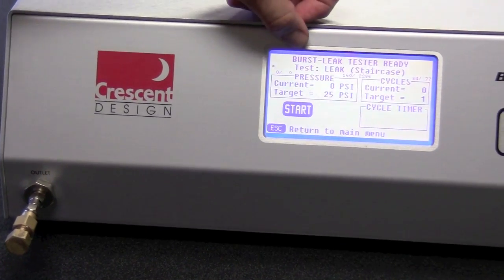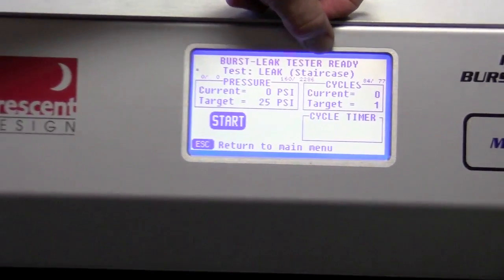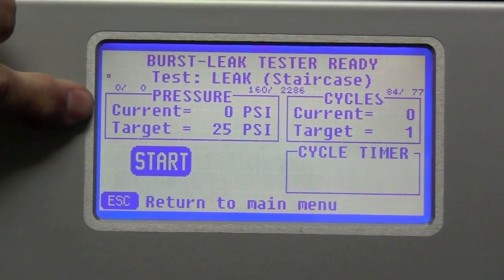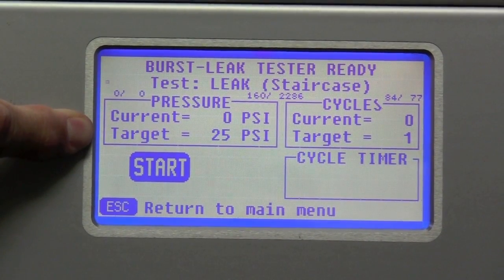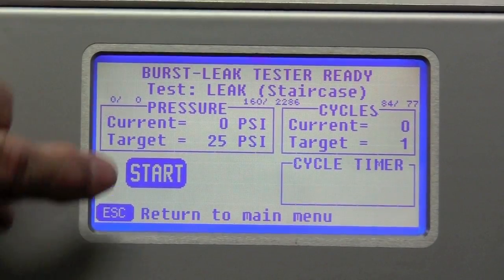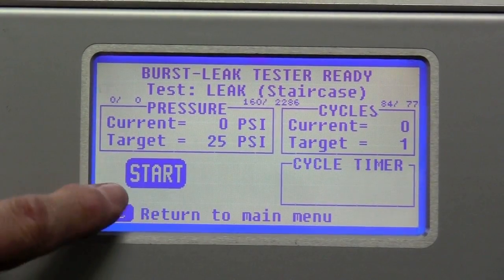So here is the main screen for the test. It says that it's ready. The test is a leak, and it's a staircase test. You see the pressure currently is 0 and the target is 25. The cycles, 1 is the target. And we're going to hit start.